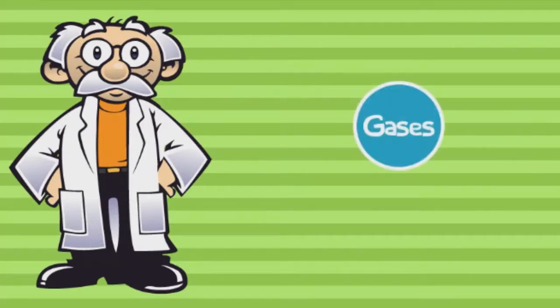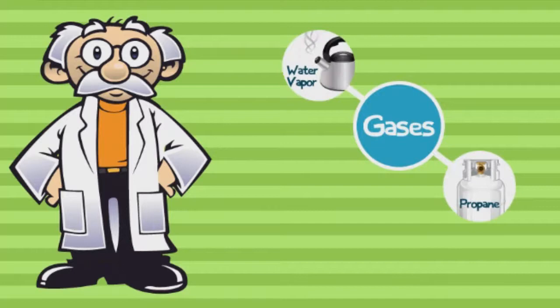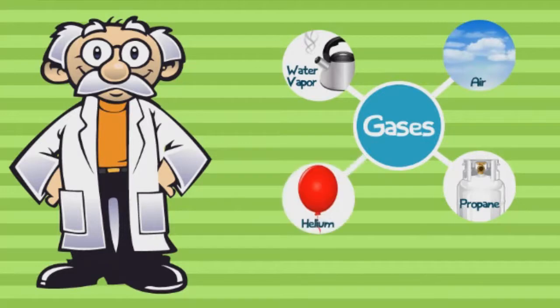Gases are a type of matter that do not take their own shape. Gases can smell or be invisible, and will tend to spread out to fill their container. Oxygen and helium are examples of gases. Gases do not have definite mass, volume, or shape.